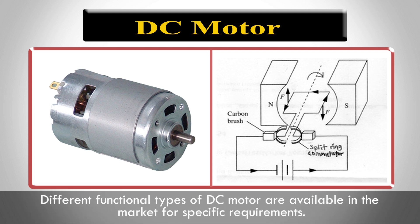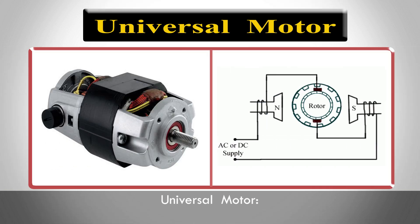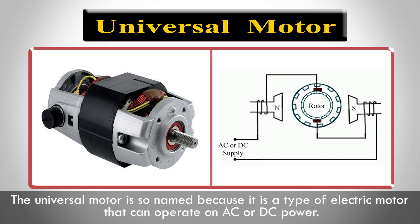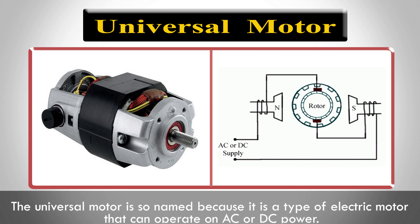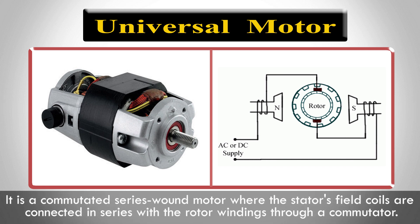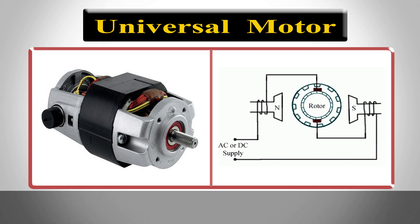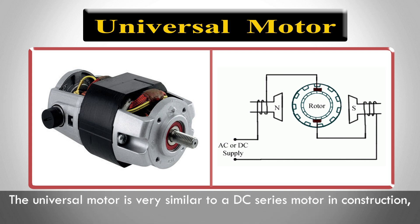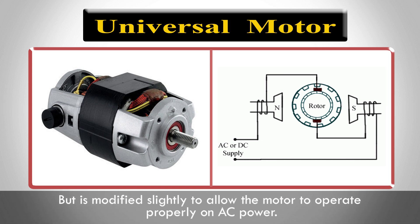Different functional types of DC motor are available in the market for specific requirements. The universal motor is so named because it is a type of electric motor that can operate on AC or DC power. It is a commutated series motor where the stator's field coils are connected in series with the rotor windings through a commutator. It is often referred to as an AC series motor, and is very similar to a DC series motor in construction but modified slightly to allow it to operate properly on AC power.